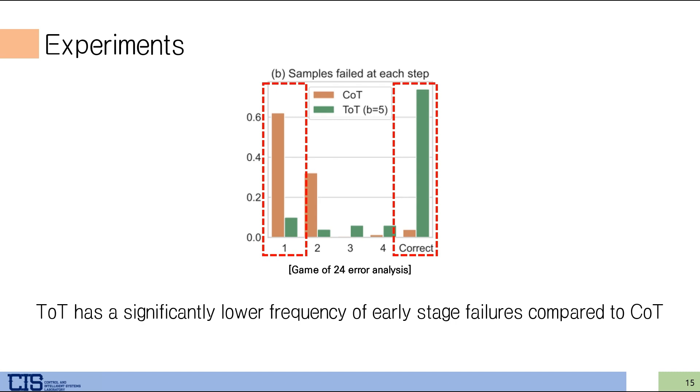This plot is the error analysis of Game of 24. Each number on the x-axis means steps and y-axis means the probability of failure. Different from CoT, ToT shows almost success in the first step. This shows using various thoughts and dynamic searching with backtracking and look-ahead makes the model solve problems in a correct way.